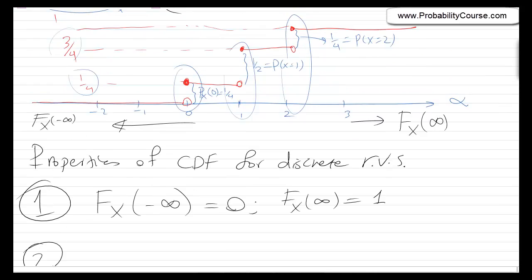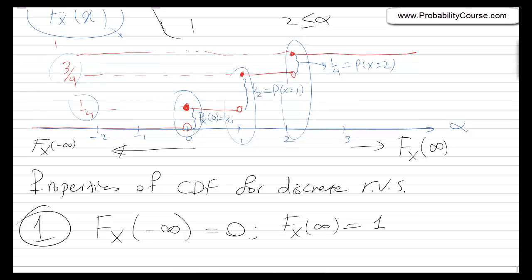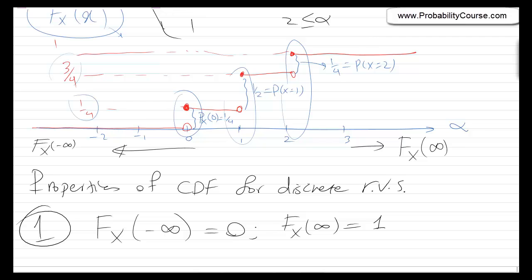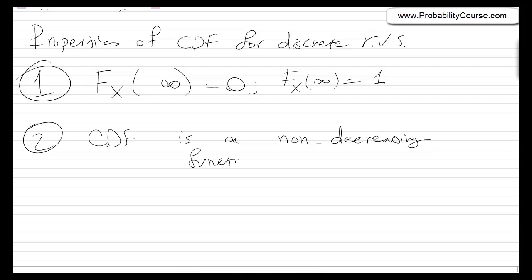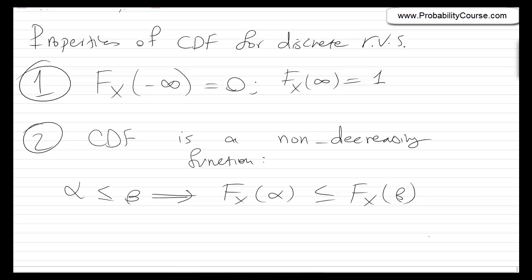Another property is that by definition, the CDF cannot go down — it is a non-decreasing function. If you go from left to right, the CDF can only go up or stay flat. Another way of saying it: if alpha is less than or equal to beta, then Fx of alpha is less than or equal to Fx of beta.